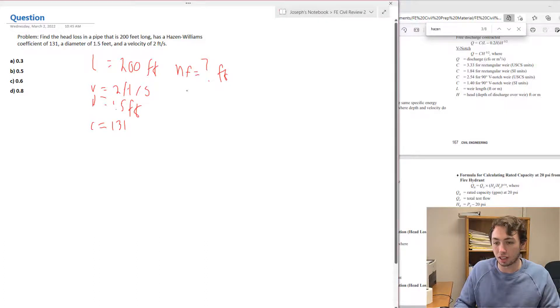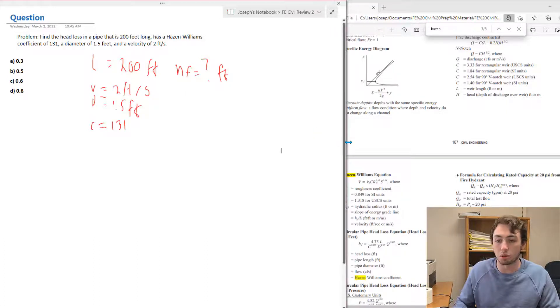Here's the equation: head loss equals 4.73 times L over C to the 1.852 times D to the 4.87, and then Q to the 1.852. So that's our equation for finding the head loss in this pipe.